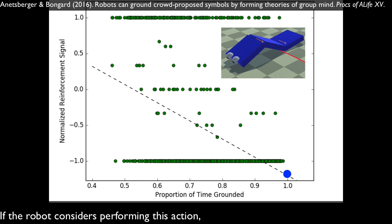If the robot considers performing this action, it knows it will spend all of its time on the ground, and the crowd is likely to punish it.